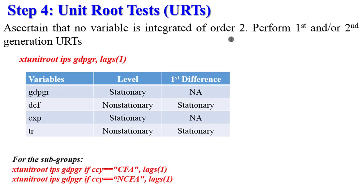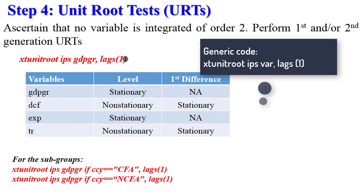Here in the summary slide is the outcome of our unit root test. From this we were able to ascertain that none of the variables is integrated of order 2. At levels, GDP growth rate and expenditure are stationary (I(0)), while at first difference, domestic credit and trade openness are stationary (I(1)). You can always modify these codes to suit your analysis. This gives you confidence that the series you are using are not I(2) — if you have I(2) series please don't use them; you can use I(0) or I(1) variables.